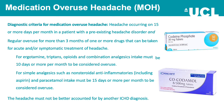Medication overuse headache: the diagnostic criteria are a headache occurring on 15 or more days per month in a patient with a pre-existing headache disorder, and regular overuse for more than three months of one or more drugs taken for acute or symptomatic treatment of headache — particularly codeine. For ergotamine, triptans, opioids, and combination analgesics, intake of 10 or more days per month is considered overuse. For simpler analgesics such as NSAIDs including aspirin and paracetamol, intake of 15 or more days per month is considered overuse.